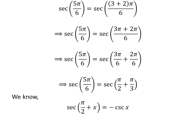We know the famous trigonometry identity: secant of half of pi plus x is equal to minus cosecant of x. The proof of the identity has been explained in the video appearing in the upper right corner of this video. The link of the video is also given in the description section. Application of the above identity gives us secant of 5 times pi upon 6 is equal to minus cosecant of pi upon 3.